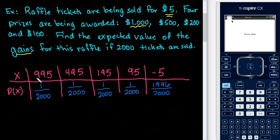The negative 5 comes from the fact that we paid $5 to play. This would represent somebody that did not win anything. So the five values that are possible for this are $995, $495, $195, $95, or negative 5.